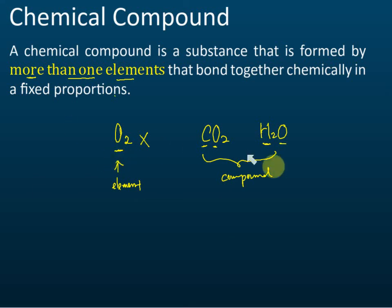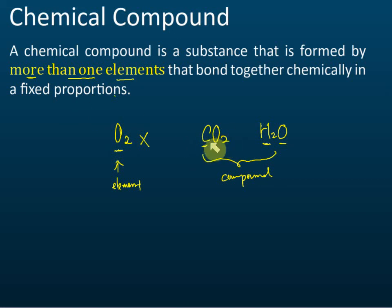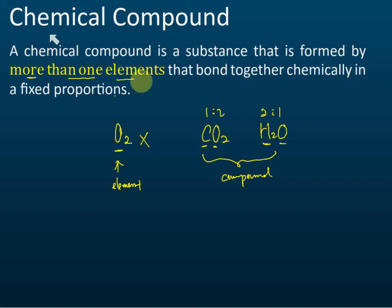If there's just one type of atom, then it's an element. In chemical compounds, the ratio or proportions of the elements are fixed. For carbon dioxide, the ratio of carbon to oxygen is 1:2. For water, the ratio of hydrogen to oxygen is 2:1. So the ratio is fixed — that's what we mean by fixed proportions.